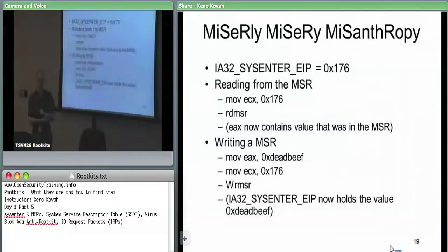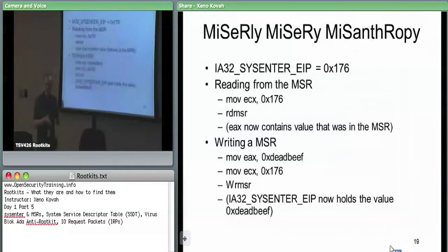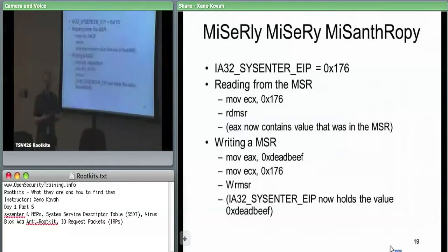That's how you read out the MSR and see what's currently in it. Then you compare it — does this 32-bit offset look like the address of KI fast call entry?